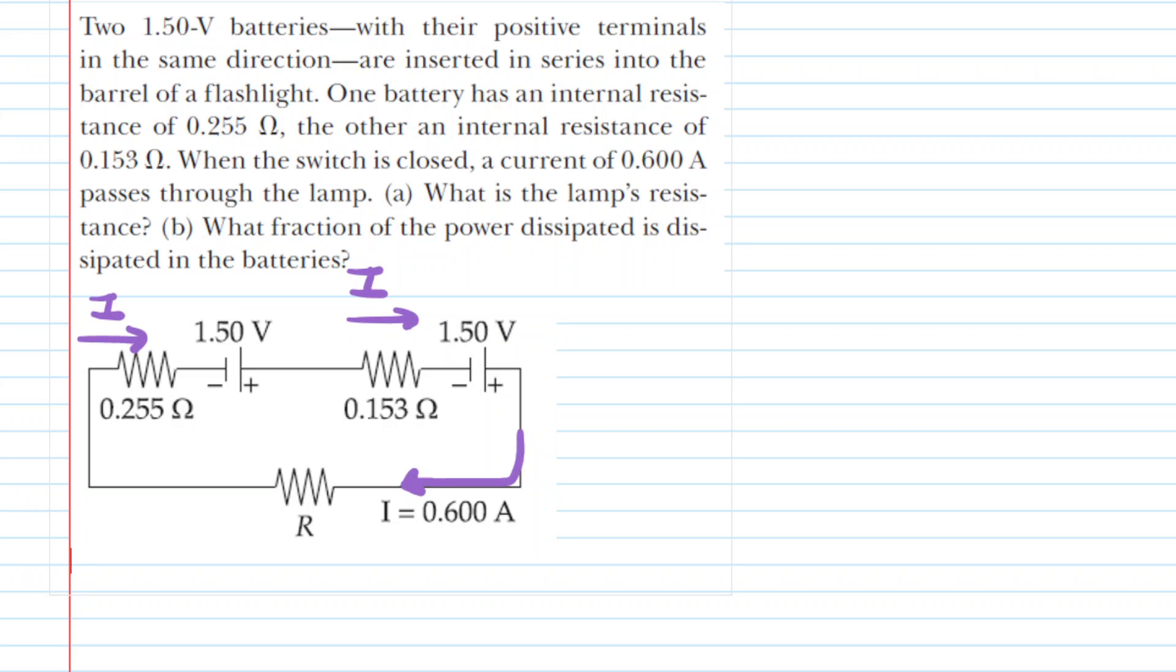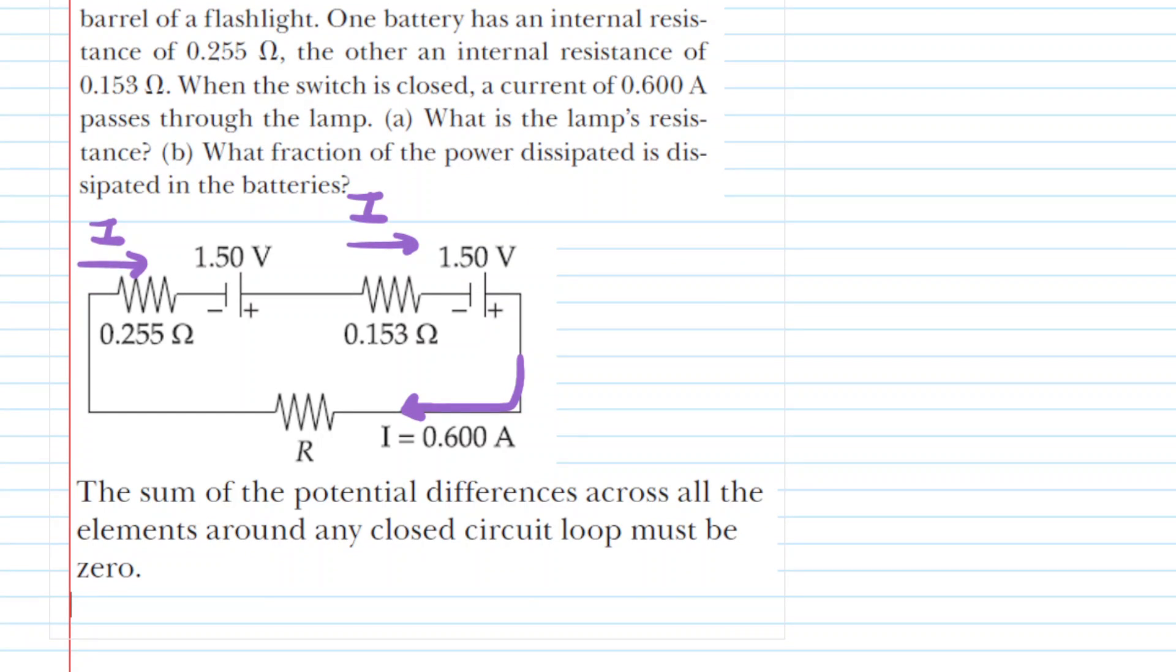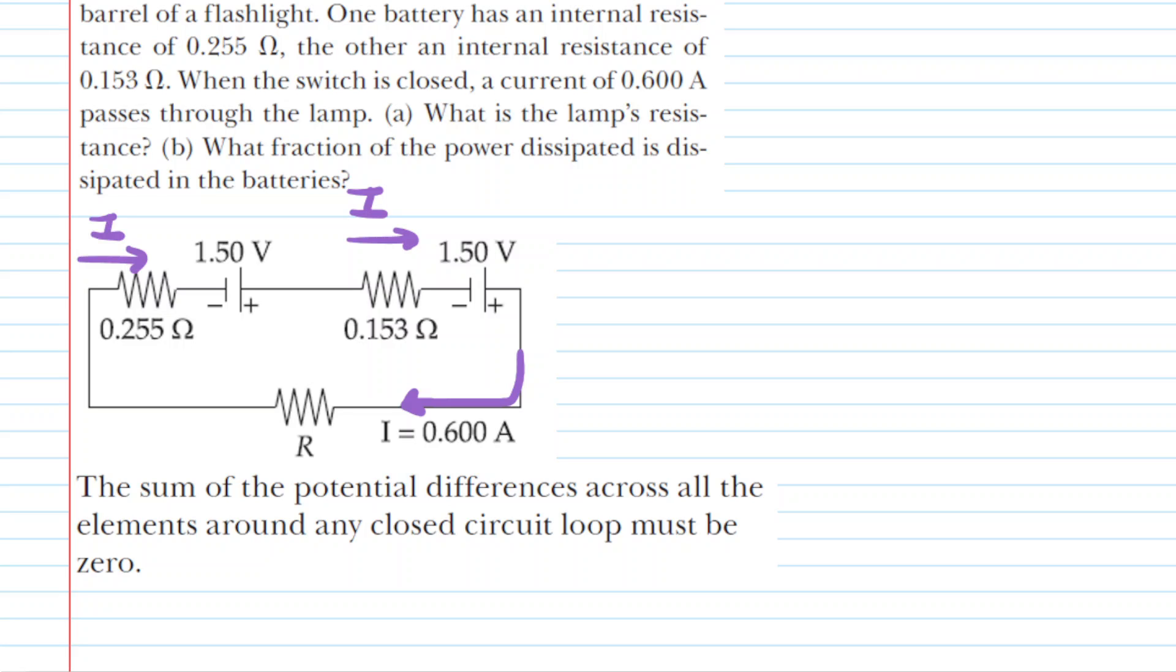And to do that, we have to apply one of Kirchhoff's laws, and in particular, we're going to use the so-called loop rule, which states that the sum of the potential differences across the elements around any closed circuit must be zero. So that's kind of a mouthful. And to get us started with understanding the loop rule, let's put down a couple of additional rules.